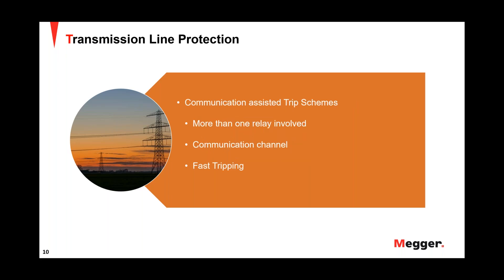The next type is communication-assisted trip schemes, which will be the majority focus of today's webinar. As the name suggests, there is a communication channel involved — more than one relay, potentially two or multiple relays in the scheme. They are considered fast-tripping schemes as opposed to conventional distance or other protection methods previously discussed.